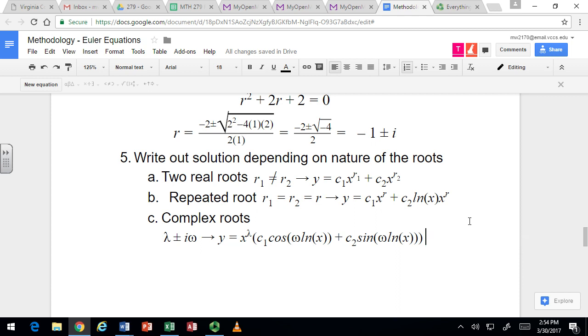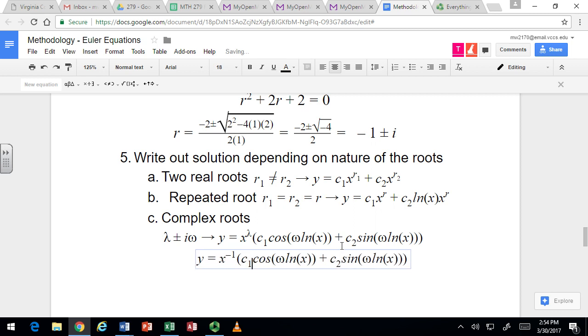Alright, so what's this going to look like for our problem? So what is lambda? Negative 1. And what is omega? 1, right. So remember, omega is the coefficient of the imaginary part, so since it's just i, omega would be 1. So we can just get rid of those and make this.